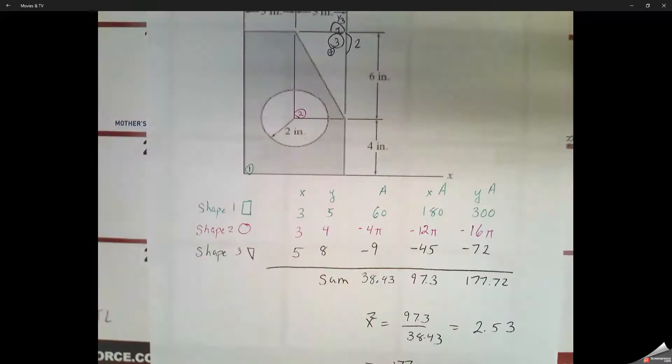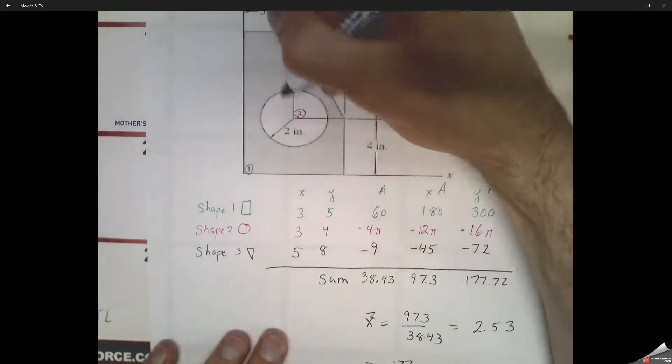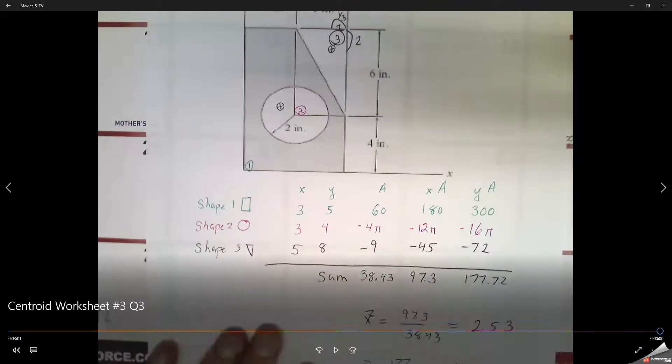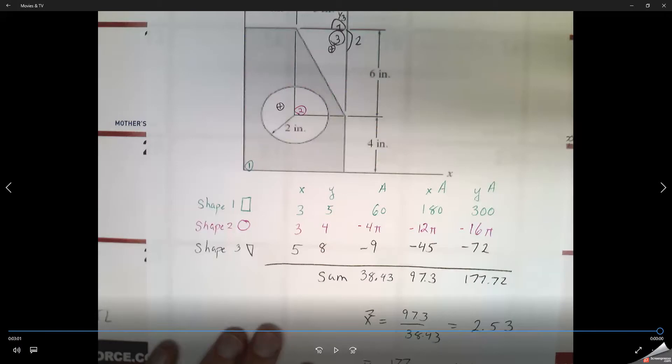And that then, if we mark it onto our sheet to find the centroid location, we want to go over about 2.5 and then up about 4.75. And then we can estimate that centroid location right about there.